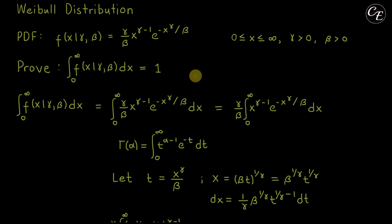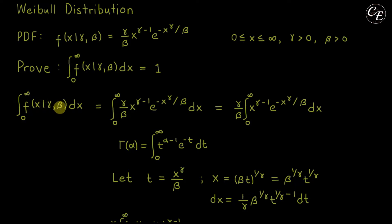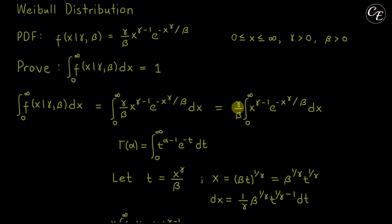Now let's start with our proof. The limits are from 0 to infinity, since x is defined on that domain. The function f(x | gamma, beta) is our general notation for the probability density function, which equals the expression above. Substituting the PDF in place of the general notation, and since gamma over beta is a constant, we can move it outside of the integral.